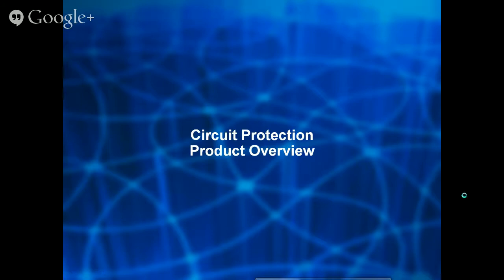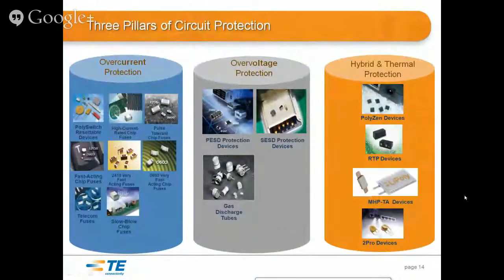In our world of protection devices, we classify products into three categories: over-current protection, over-voltage protection, and hybrid/thermal protection. Over-current protection refers to any device whose resistance goes up during a fault condition. In the case of fuses, they go to a complete open circuit — everybody is familiar with fuses, they work well, but when they open they have to be replaced.